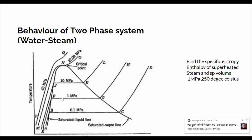When solving such numericals, what we need to first figure out is whether the steam is superheated or not. What we do is first look at the steam tables and figure out what is the saturation temperature corresponding to the given pressure. The given pressure is 1 megapascal, so in the steam table we need to look for the saturation temperature.